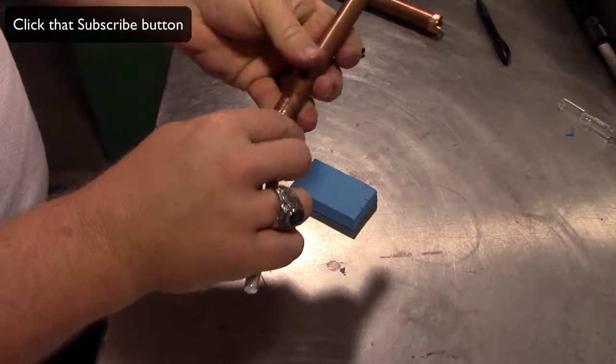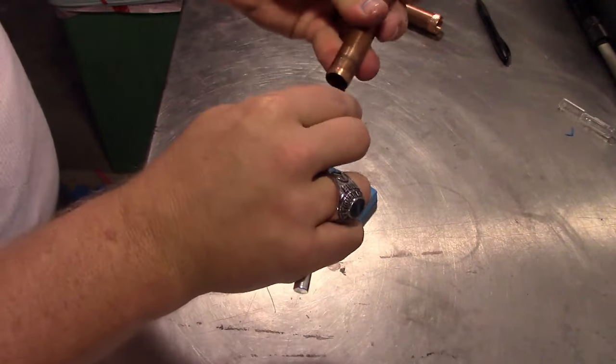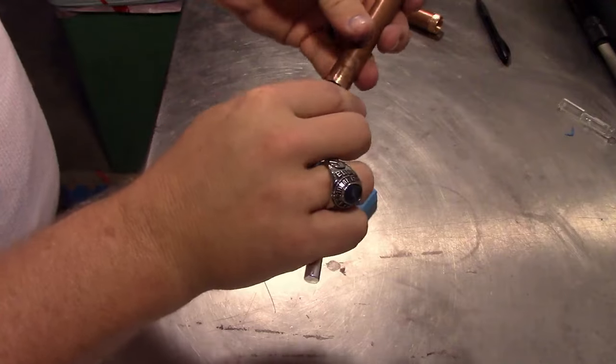The first thing I'm going to do is take my piece of pipe, run my blade along the inside, just turning it, to sharpen that edge.